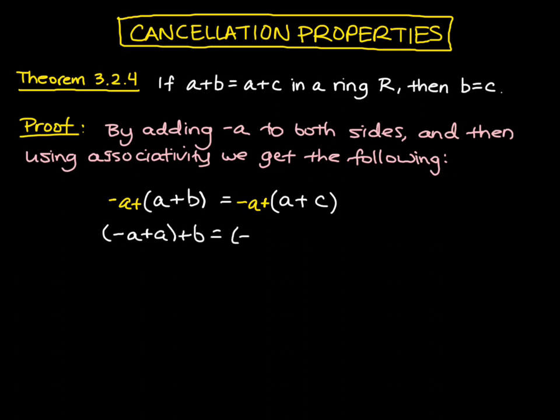Similarly on the right hand side, we can group here. And then what do we get? We get zero plus b equals zero plus c. So b equals c. So that was really nice and straightforward way of showing that we have cancellation with addition.